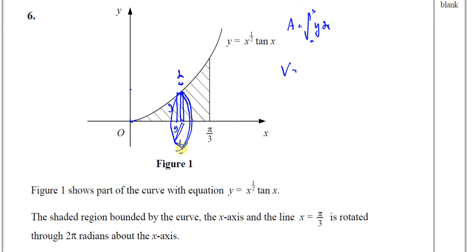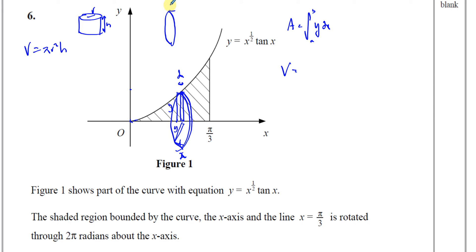For the volume, instead of rotating the whole shape at once, we rotate each little rectangle around the x-axis to form a cylinder. The radius of that cylinder is the y value and the thickness is dx. The volume of a cylinder is π r² h, so the volume of one small cylinder is π y² dx. Summing all of them gives the general formula: V = π ∫ y² dx.